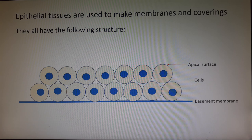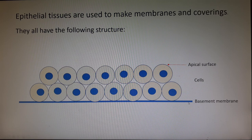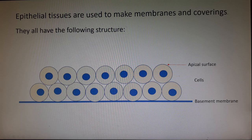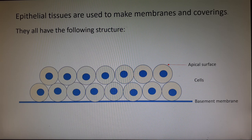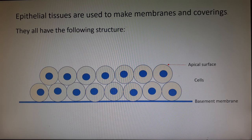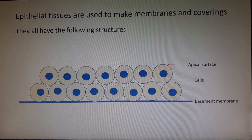Epithelial tissues are the group of primary tissues that make membranes and coverings in different areas of the body, and it's a very simple tissue. We have a glue layer at the bottom called the basement membrane, and then stuck to that glue layer I have rows and rows of cells. The top surface of the last row of cells is called the apical surface. Epithelial tissues are arranged in sheets, but if you take a sheet of paper and curl it around on itself you can also make a tube — and we're going to make lots of tubes.